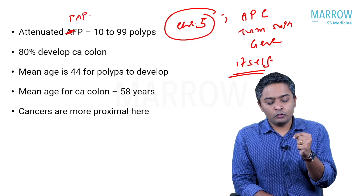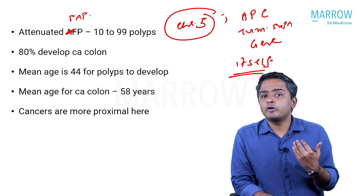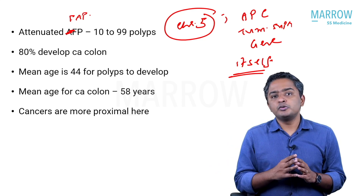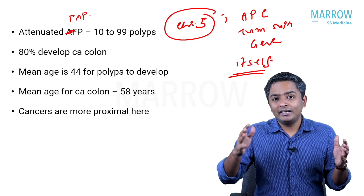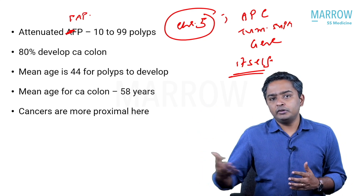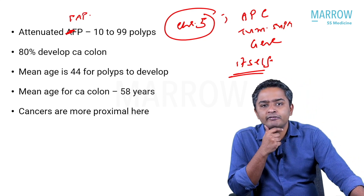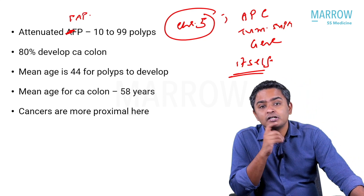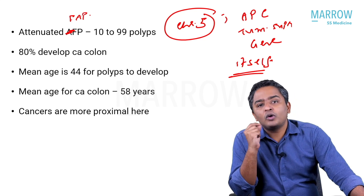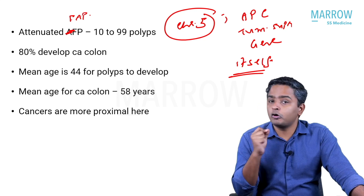It's the same gene and chromosome, but because there is a small difference in the locus involved, there is a reduction in the number of polyps. The number of polyps is usually not hundreds to thousands, but below 100 — on average, 10 to 99 polyps. 100 and above is classified as classic FAP. The risk of malignancy is a little less — in classic FAP it was 100%, here it is 80%. One in five might escape without malignancy, but 80% of attenuated FAP patients will also develop malignancy.